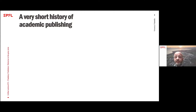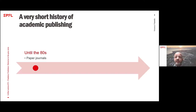So let's start with some context and find out how and when predatory publishers appeared. Let's take a look at a very simplified and brief history of academic publishing. Until the 80s, the business model of an academic publisher was quite simple: authors submit articles to journals, journals review them, collect, print and distribute them in the form of a paper journal. The main profits are made by selling subscriptions to libraries, so the publisher needs to ensure high quality content to perform well on the market.